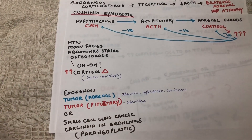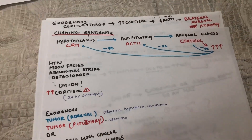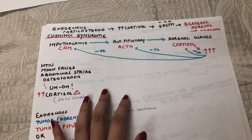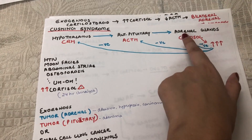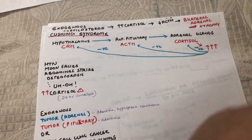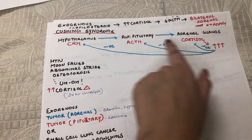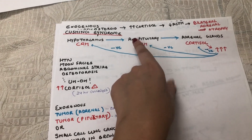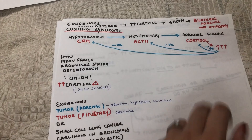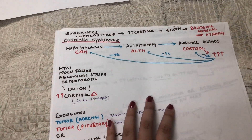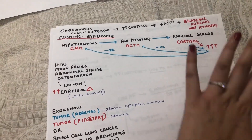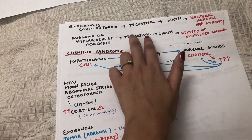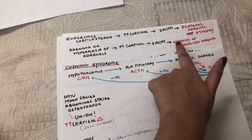The second cause is a tumor in the adrenal gland — an adenoma, hyperplasia, or carcinoma. The tumor keeps secreting cortisol autonomously. The pituitary responds normally by suppressing ACTH. The tumor-bearing adrenal keeps producing cortisol, but the other adrenal receives no ACTH stimulation and becomes atrophied. So these patients have increased cortisol, decreased ACTH, and atrophy of the uninvolved adrenal.